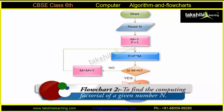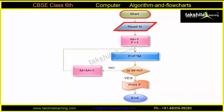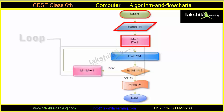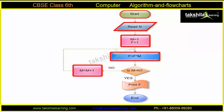Let us draw a flowchart to find the factorial of a given number n. Students, here is the flow. Start. Read n. Set m is equal to 1. f is equal to 1. Loop: f is equal to f into m. m is equal to m plus 1. If m is equal to n, exit loop.